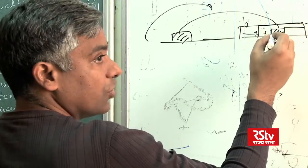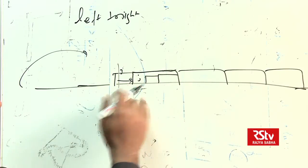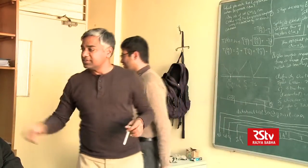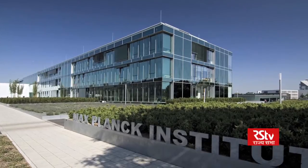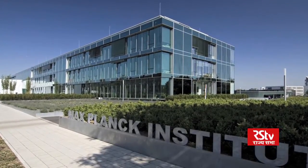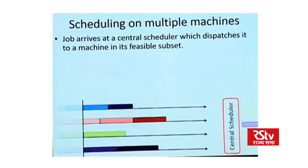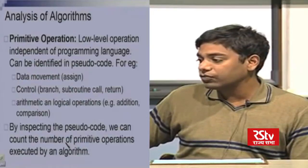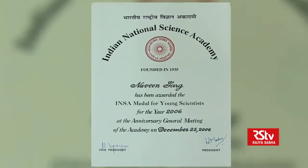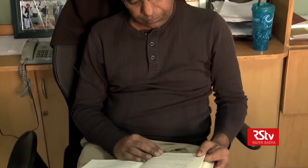Naveen Garg is a professor of computer science at the Indian Institute of Technology, Delhi. His research interests are in theoretical computer science, specifically in design and analysis of algorithms. Professor Garg did his B.Tech and PhD in computer science from IIT Delhi. After that, he was a postdoctoral researcher at Max Planck Institute for Informatics, Germany from 1994 to 1997. Since 1998, he has been a faculty member in the CSC department at IIT Delhi. His contributions are primarily in design and analysis of approximation algorithms for NP-hard combinatorial optimization problems arising in network design, scheduling, routing, facility location, etc. He has been honoured with many awards, notably the INSA Young Scientist Medal in 2006 and the S.S. Bhatnagar Award for Mathematical Sciences in 2016.